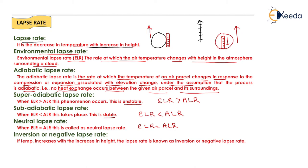At higher altitudes in the atmosphere, with increase in height, an increase in temperature will take place. If temperature increases with the increase in height, the lapse rate is known as inversion or negative lapse rate. That is all about the dispersion of air pollutants in the atmosphere and the lapse rate concept.